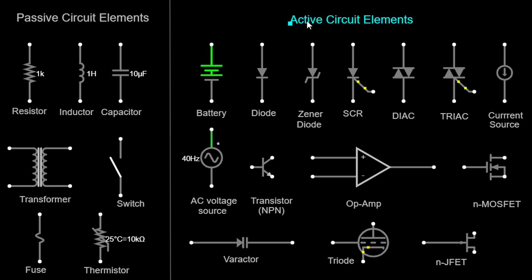Active circuit elements. Battery. A battery is a device that converts chemical energy into electrical energy. It provides a constant voltage source in a circuit, allowing a continuous flow of current. The positive terminal is represented by a longer line, and the negative terminal is represented by a shorter line.